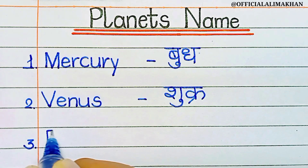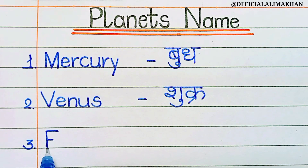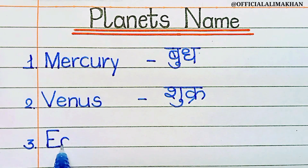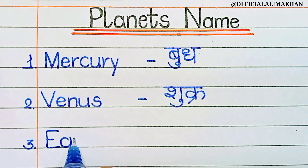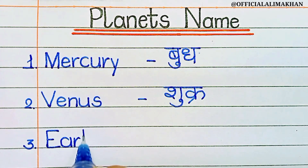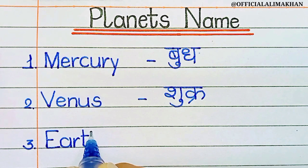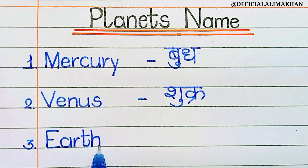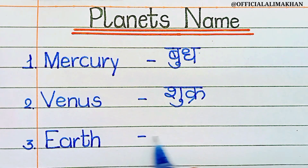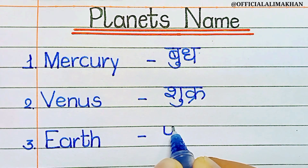Number three, Earth. E-A-R-T-H. Earth means Prithvi.